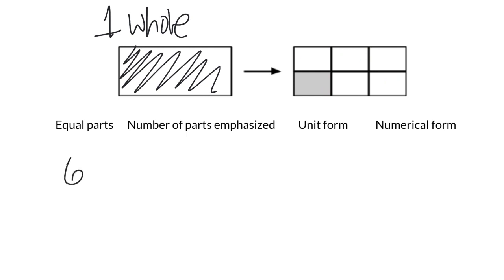And then how many parts have been emphasized? Well, we can see that it looks like they're trying to shade in one out of those six. So we can say we've got one equal part, which means in unit form, we're going to call that one-sixth because it's got six equal parts and one of them has been emphasized. And so in numerical form, we would write it like that, one-sixth.